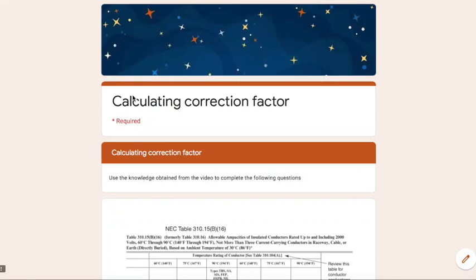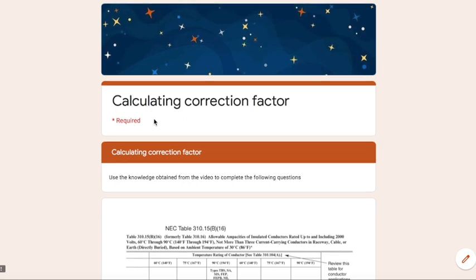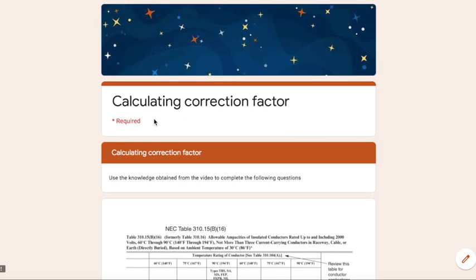Now we're going to start discussing calculating correction factor. Remember, we just talked about adjustment factor, which is the number of conductors in the conduit because of the heat they create. Well, now we're going to do correction factor, which is actually taking into account the ambient temperature in the air around the conduit or the cable.